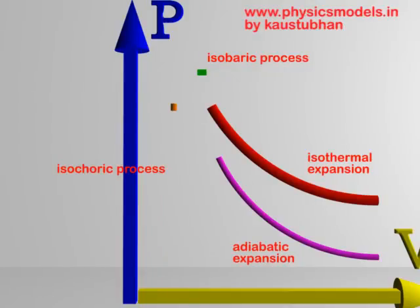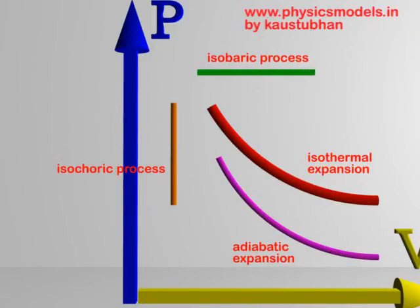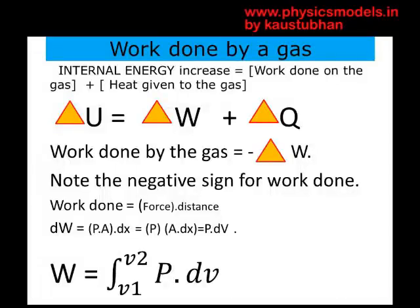This is the familiar PV diagram you have seen before in a previous animation. There are four kinds of graphs between pressure and volume. A few words about the first law of thermodynamics will be in order.